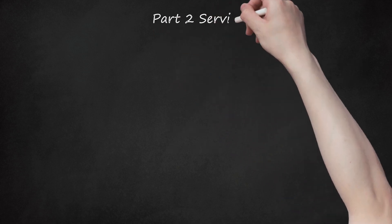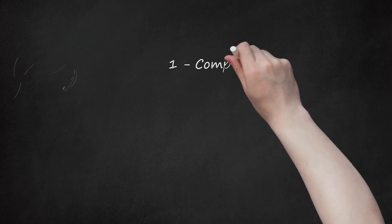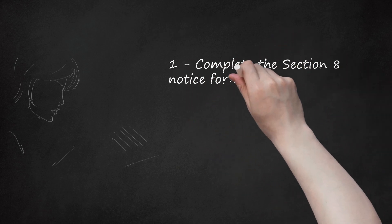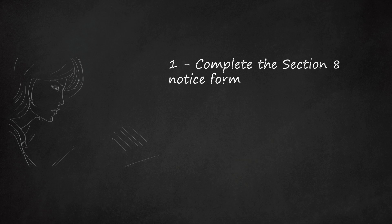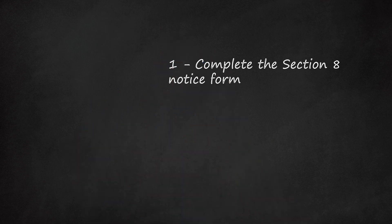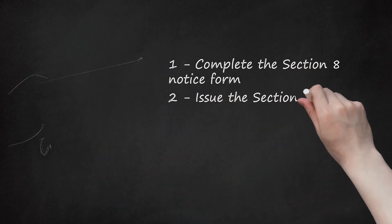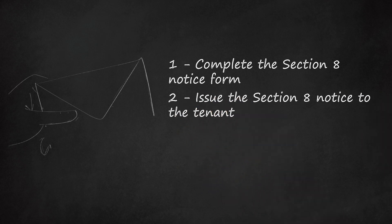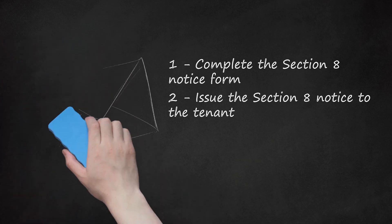Part 2: Serving a Section 8 notice. Complete the Section 8 notice form. There is a set form for a Section 8 notice which must contain specific information. You must complete this form exactly as instructed; otherwise, the court may reject the document and request. The form is available online from court websites. Issue the Section 8 notice to the tenant. Typically, it is best to give notice to the tenant by first class post and also by personal delivery. It is helpful to record the delivery or have a witness to the delivery who can testify that the tenant received the notice personally.